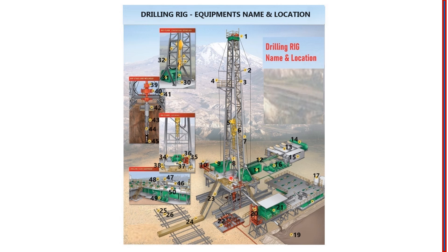Number 8 is the drilling pipe. Number 9 is the dog house — a small store on the rig floor. Number 10 is the accumulator, which is used to control the BOP — to open or close the BOP. It is located a little far from the rig floor, around 50 to 70 feet away.